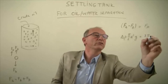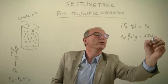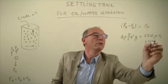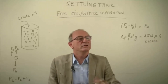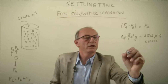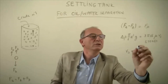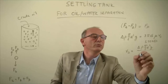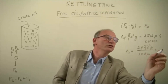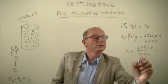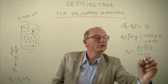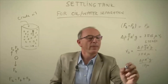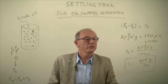Stokes law says that the drag force equals 3π multiplied by the diameter of the water droplet multiplied by the viscosity multiplied by the settling velocity. Applying this, you can calculate the velocity. The settling velocity equals delta rho multiplied by d squared multiplied by the gravity constant, divided by 18 times the viscosity. This is the settling velocity.